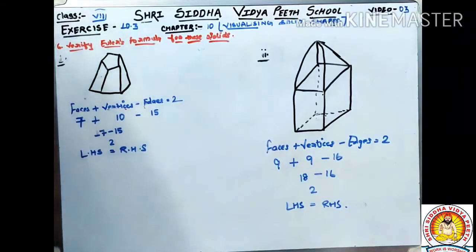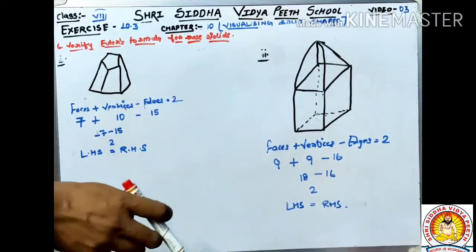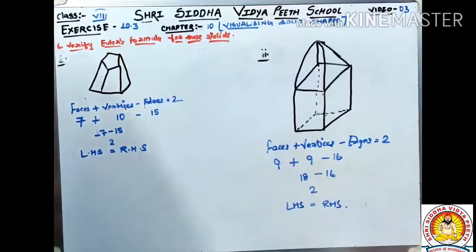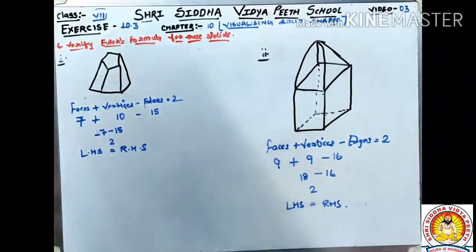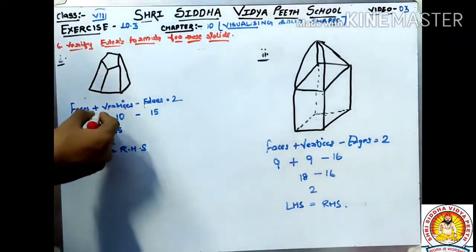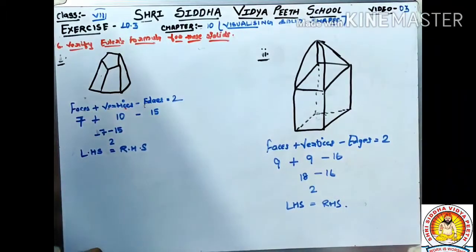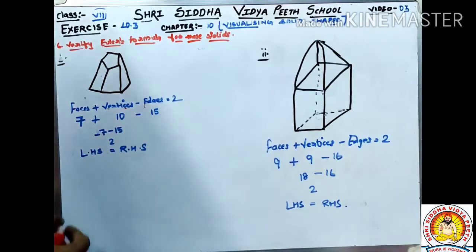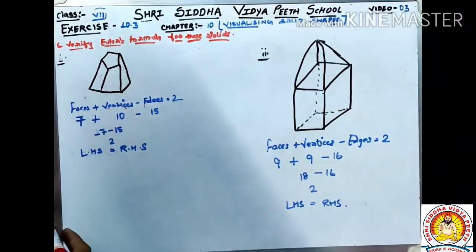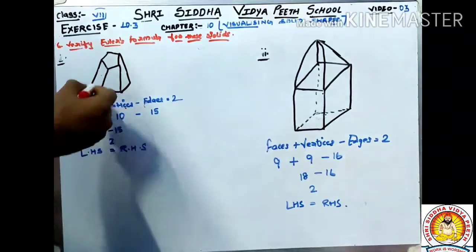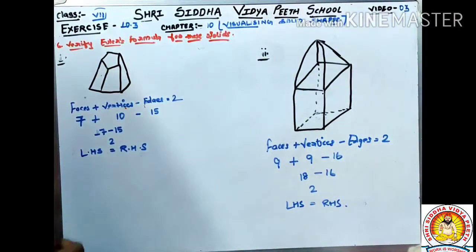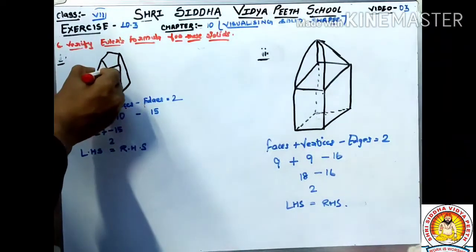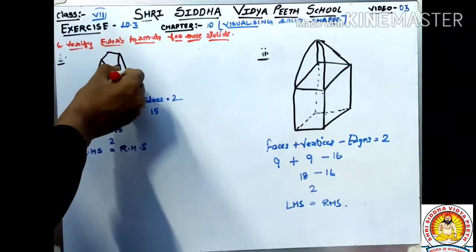Now Question Number 6: verify using Euler's formula for these solids. We have to verify Euler's formula, which states: Faces plus Vertices minus Edges is equal to 2. We will first count the faces — faces are flat surfaces. Counting the faces of the first figure: 1, 2, 3...